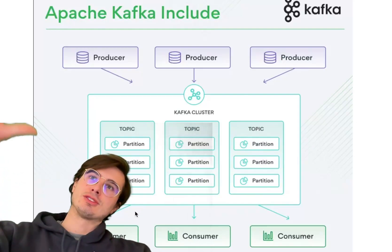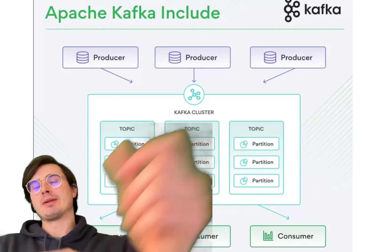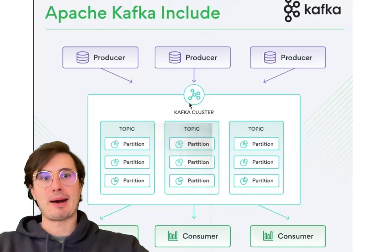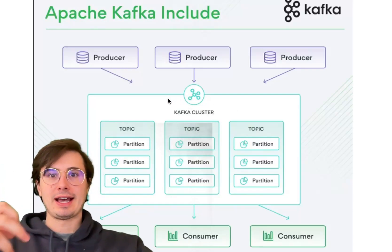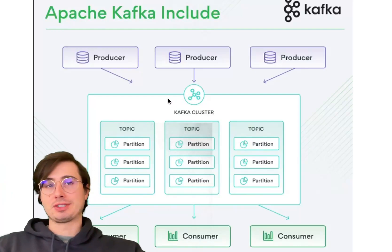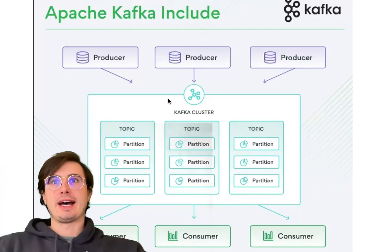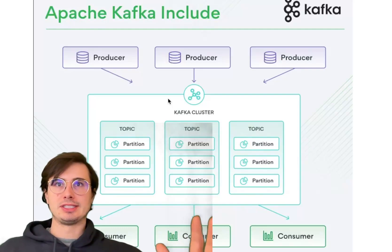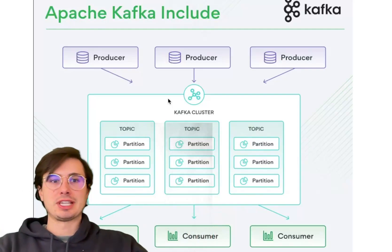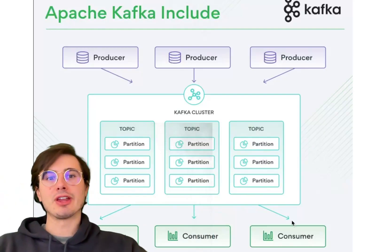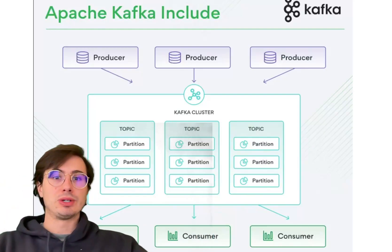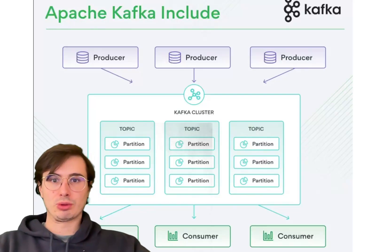Topics are the organizational structure — producers write log data to these topics, and consumers read the logs generated by those topics to consume the data. This helps ensure durability and fault tolerance because you have many distributed systems all partitioning their own segments of data, so the failure of one segment doesn't affect the others. Kafka's event-driven design makes it a natural choice for real-time data pipelines and stream processing.